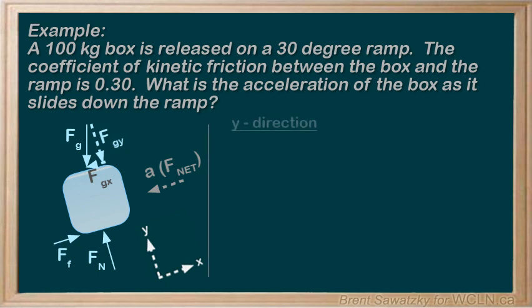Considering the Y direction, Fnet,Y equals MAY. The forces in our Y direction on the left include Fn, our normal force, going up, positive, and Fgy, going down, negative. And on the right, we know that the acceleration in the Y direction is zero, as we're not jumping off the ramp.